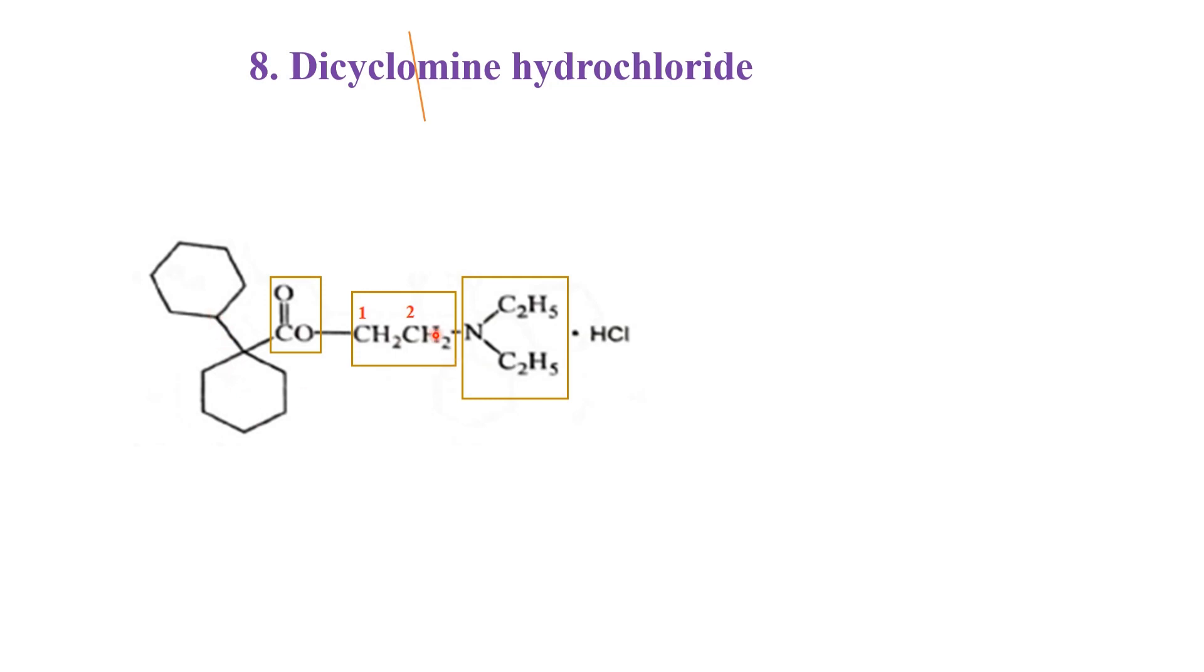That is why its chemical name is 2, because this would be attached with the second carbon, that is why 2-diethyl amino ethyl and this is bicyclohexyl, bicyclohexyl-1-carboxylate hydrochloride. That is the chemical name of this dicyclomine hydrochloride.